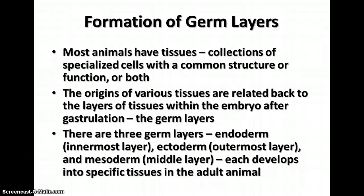Most animals have tissues, which are collections of specialized cells with a common structure or function, or both. All of these various tissues originate back to the layers of tissues within the embryo after gastrulation occurs. There are three germ layers that will form: the endoderm, the innermost layer; the ectoderm, the outermost layer; and the mesoderm, or middle layer. Each one develops into specific tissues in the adult animal.